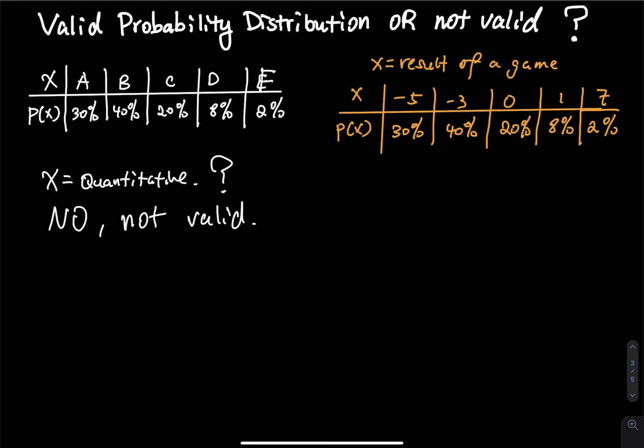What about the other table? Here, x represents the result of a game, and this time x is negative. Can x be negative? Of course x can be negative.